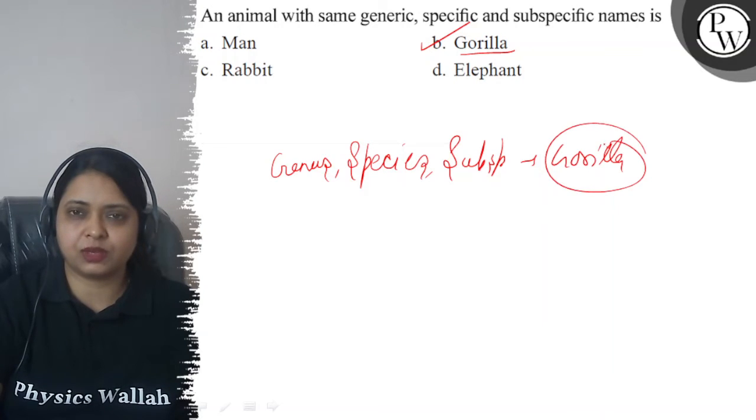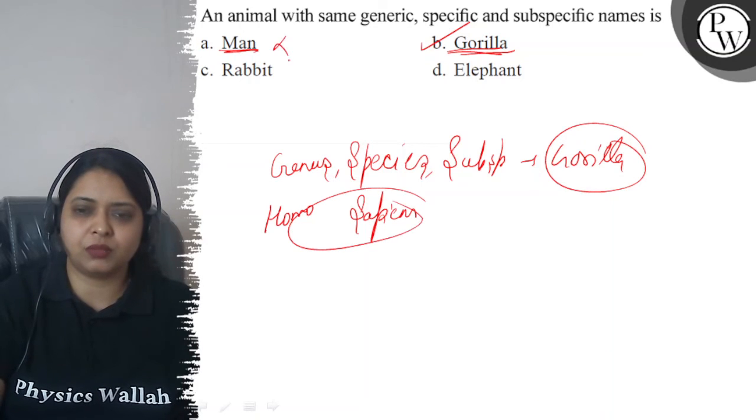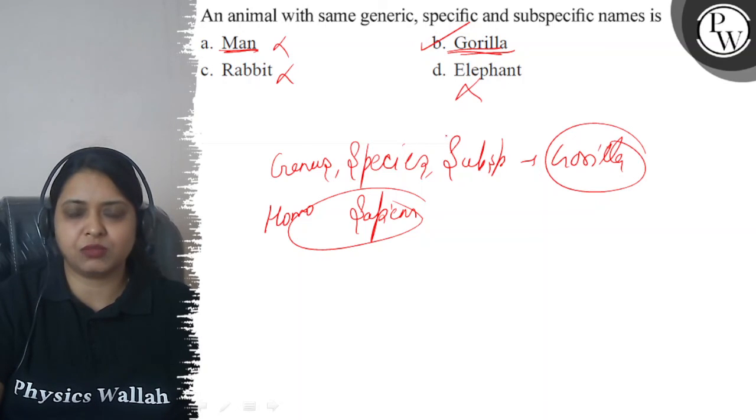So, this is why this question was asked and the final answer is Gorilla. If you have seen in Man, the genus is Homo and the species is sapiens. In the same way, the genus and species name is also different for rabbit and elephant is also different.